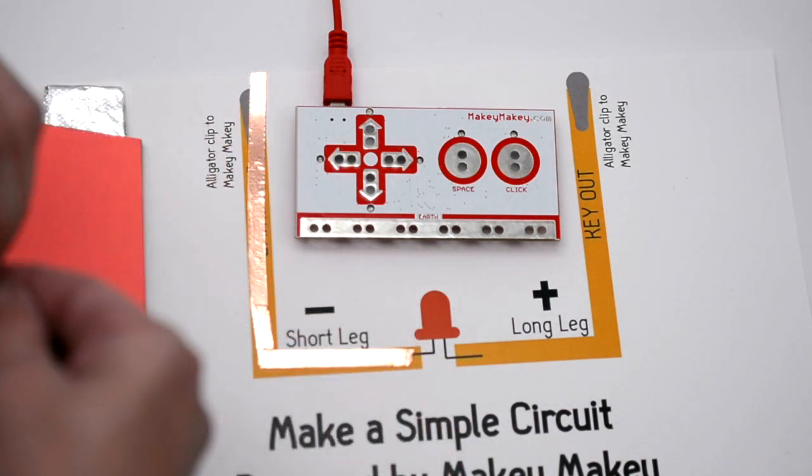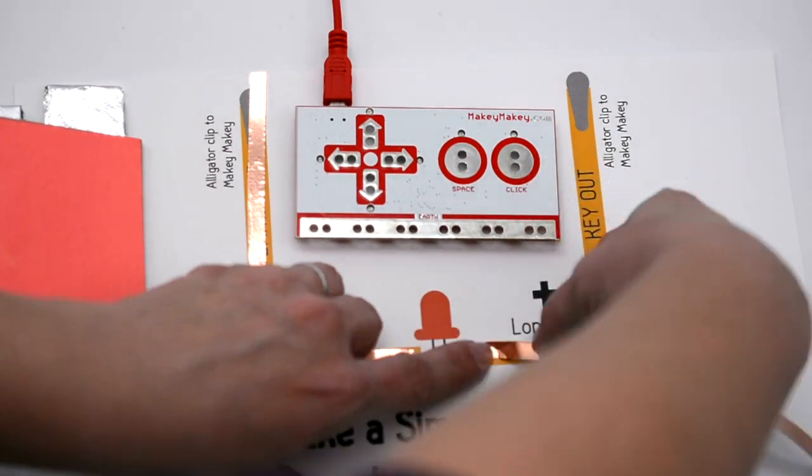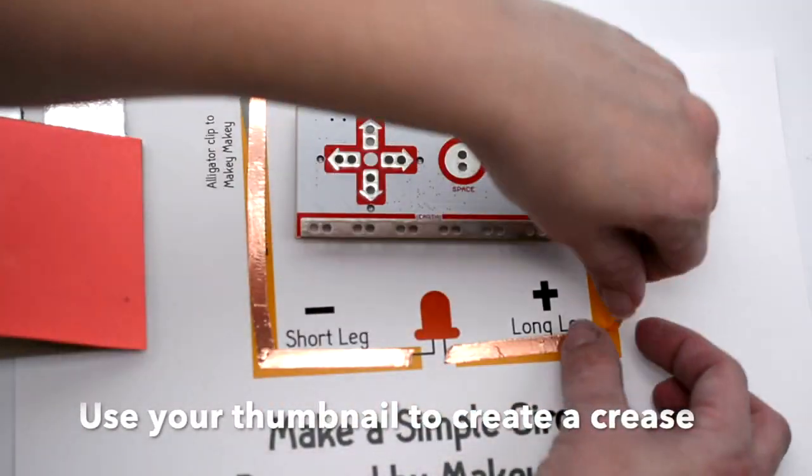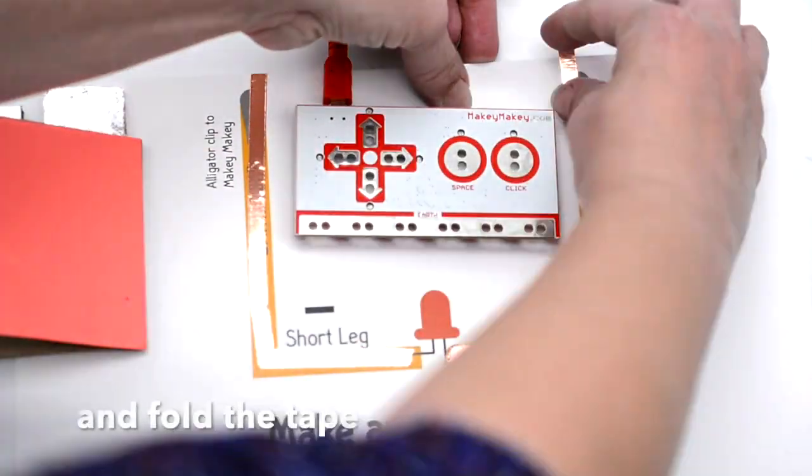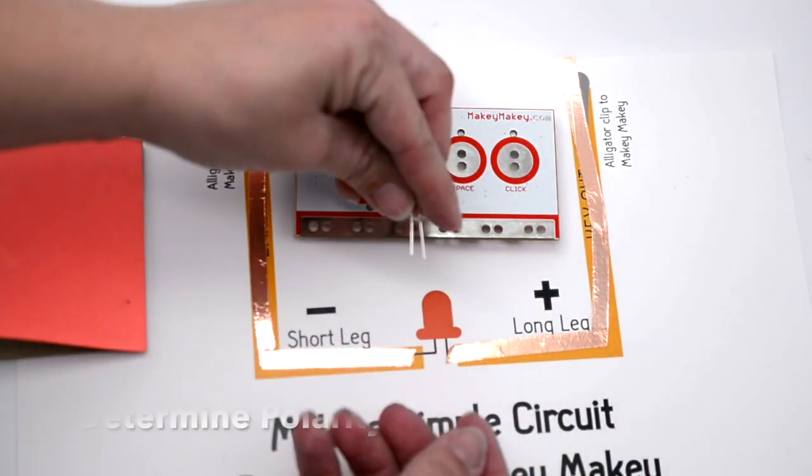You're going to do the same thing for the key out side. The key out side is the positive side of your simple circuit. And the short leg side is your earth side, which is your negative side. So you might be tempted to tear your tape, but it's better if you fold the tape and keep one long piece of tape so that will help ensure your connectivity.